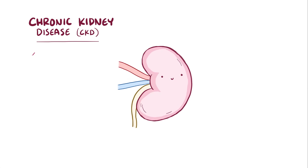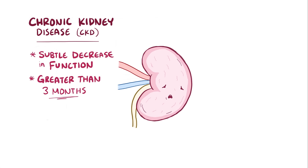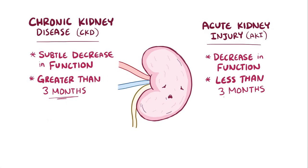Chronic kidney disease is a broad term that includes subtle decreases in kidney function that develop over a minimum of 3 months. In contrast, acute kidney injury refers to any decrease in kidney function that happens in less than 3 months.